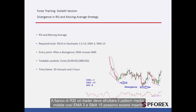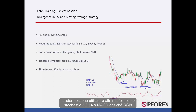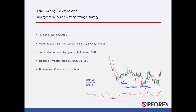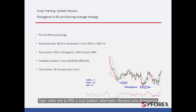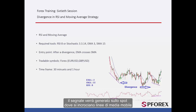Alongside RSI, a trader must exploit the Moving Average Pattern, so EMA3 and SMA15 can be inserted. A trader can also utilise other patterns such as Stochastic 3.3.14 or MACD instead of RSI 8. Whenever RSI or its alternate patterns detect a divergence, a signal will be generated on the spot where the moving average lines cross each other.